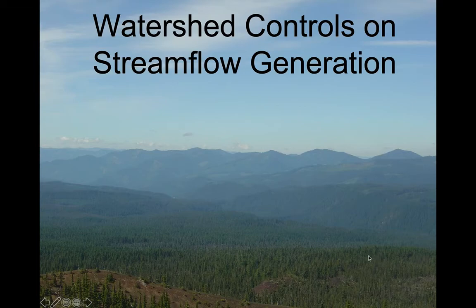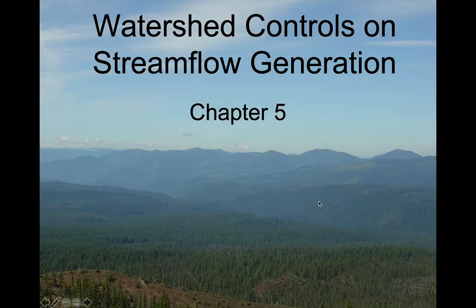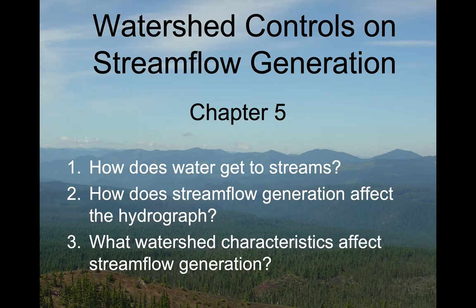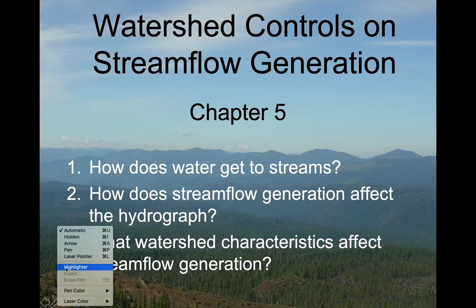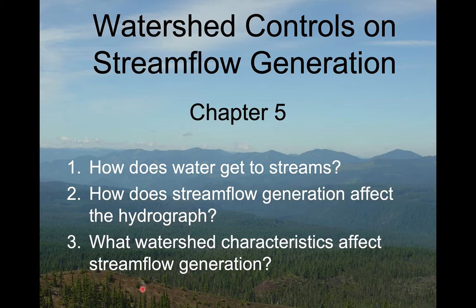Welcome to the next unit in Watershed Hydrology. We are going to focus on how water gets to streams in this section of the course, still within chapter five of your textbook. We're going to break that down into three questions: How does water get to streams? How does the way it gets to streams — which we call the stream flow generation mechanisms — affect the hydrograph, or how quickly the stream rises and falls in response to precipitation? And finally, how do watershed characteristics affect the stream flow generation mechanisms?